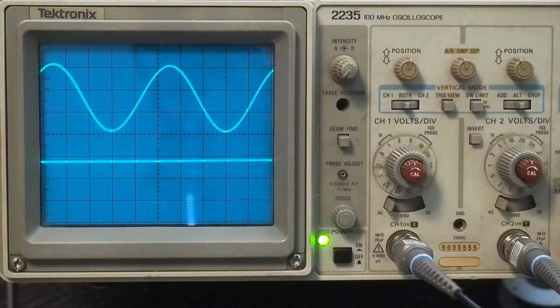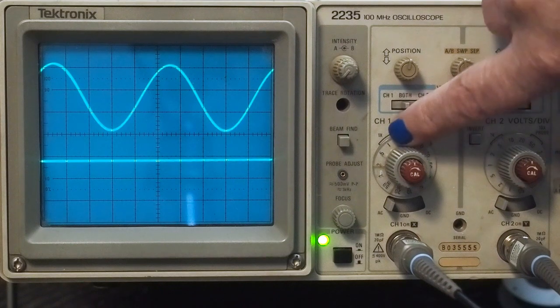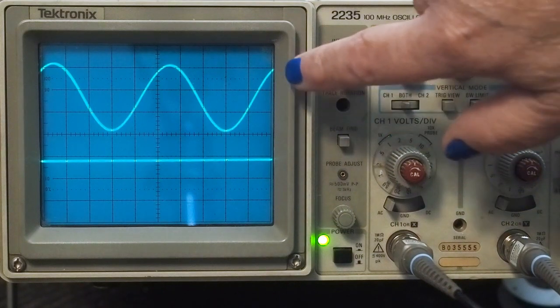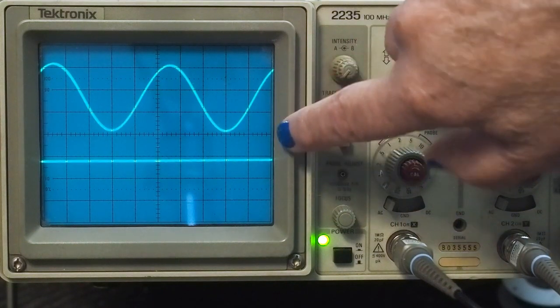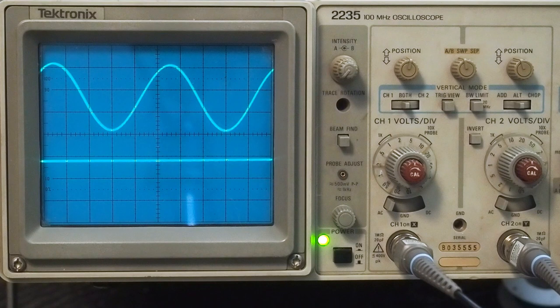The signal we're going to be putting in, which would be like the music, is from a TEMA signal generator with a 1 kilohertz sine wave. If you look here, we're on 1 volt per division. So we've got 1, 2, 3 volts peak to peak.